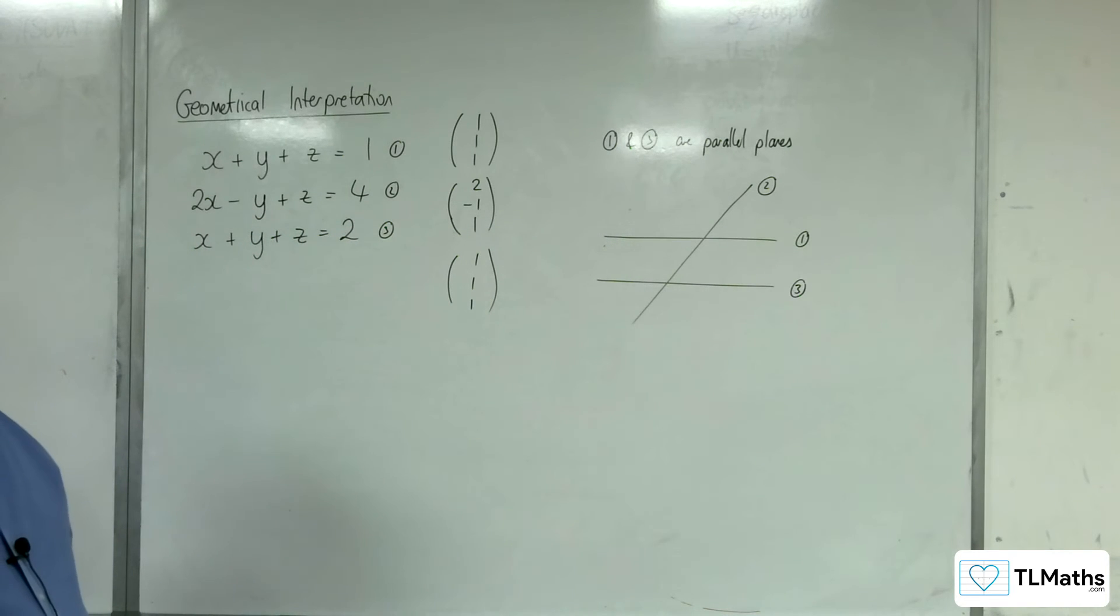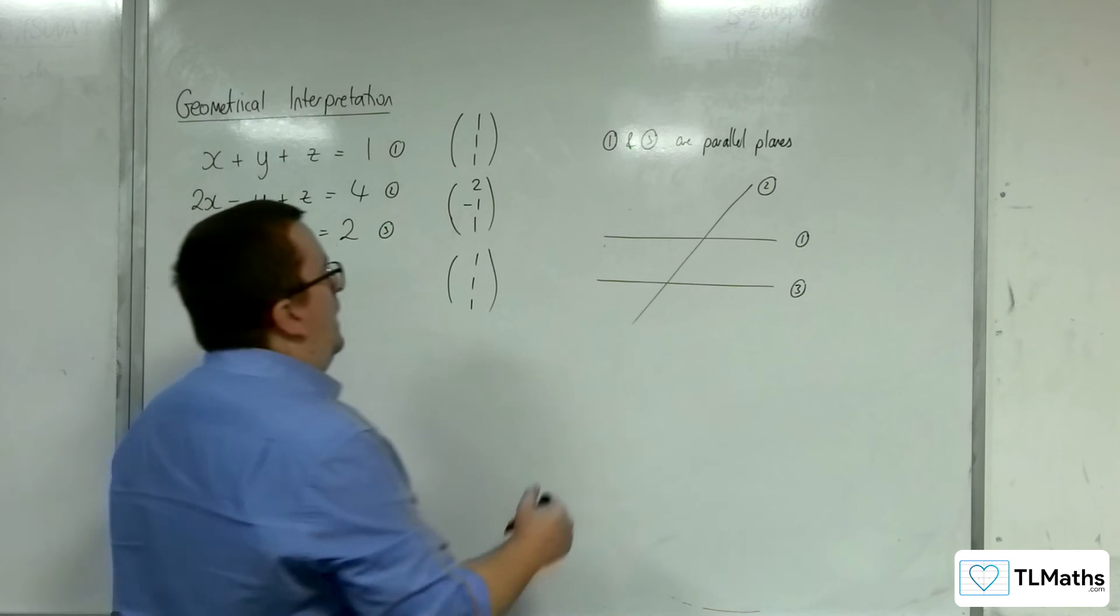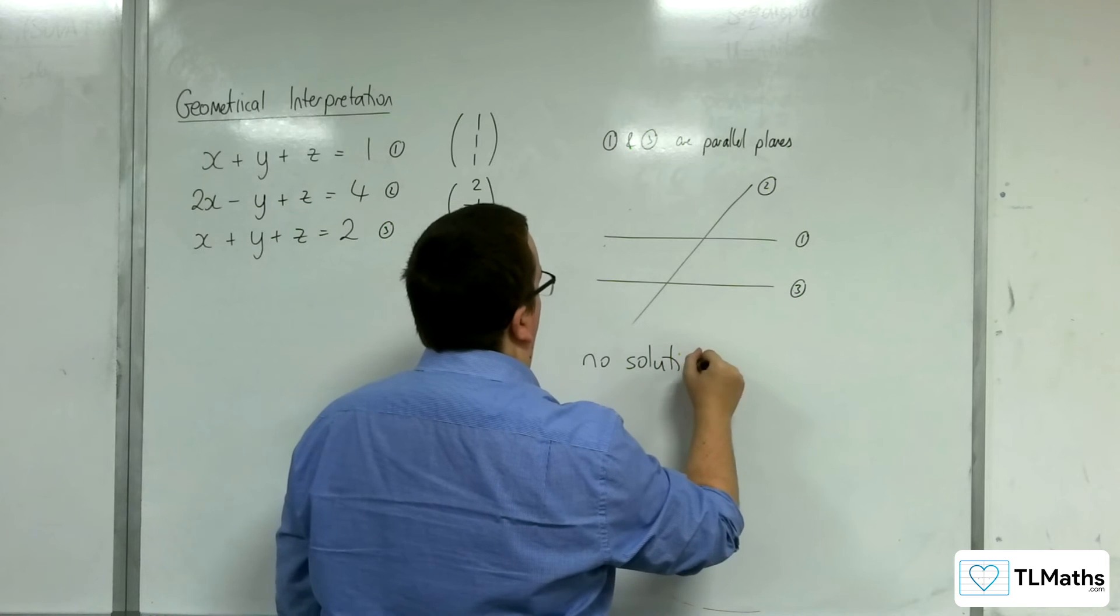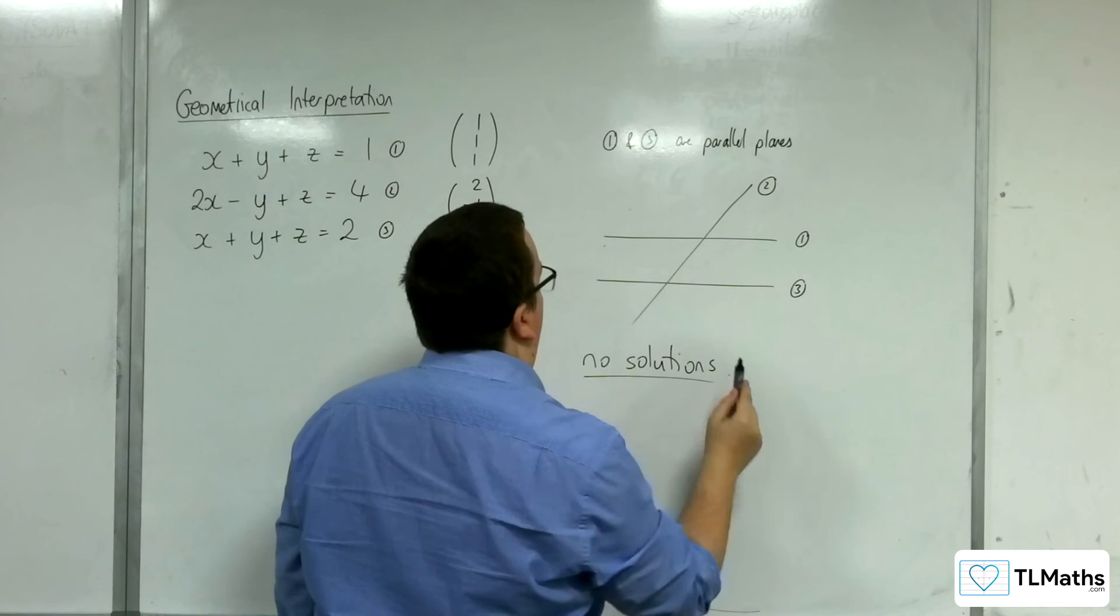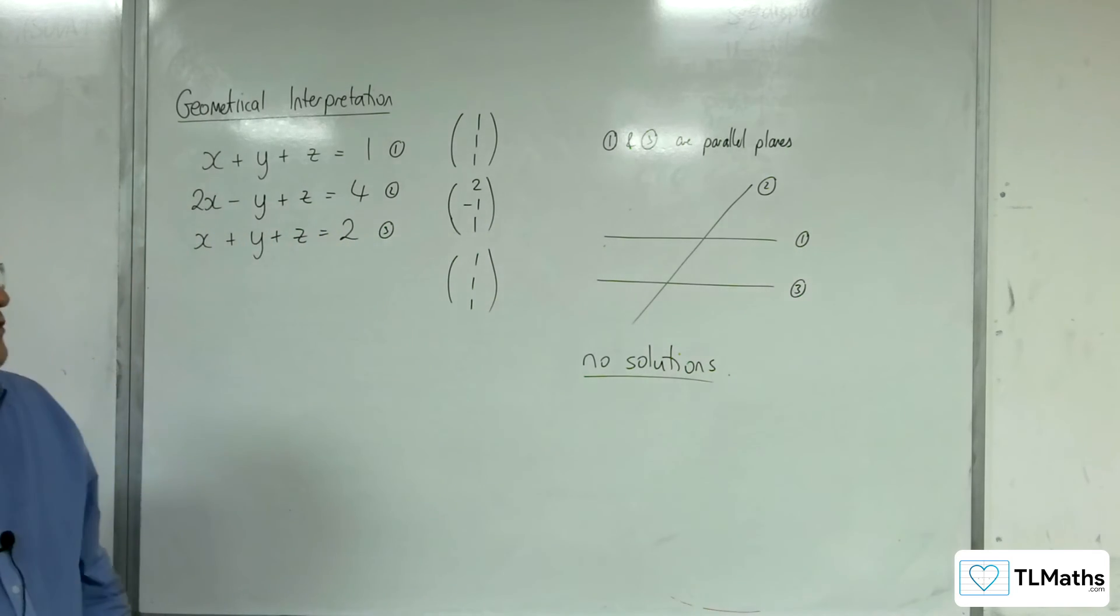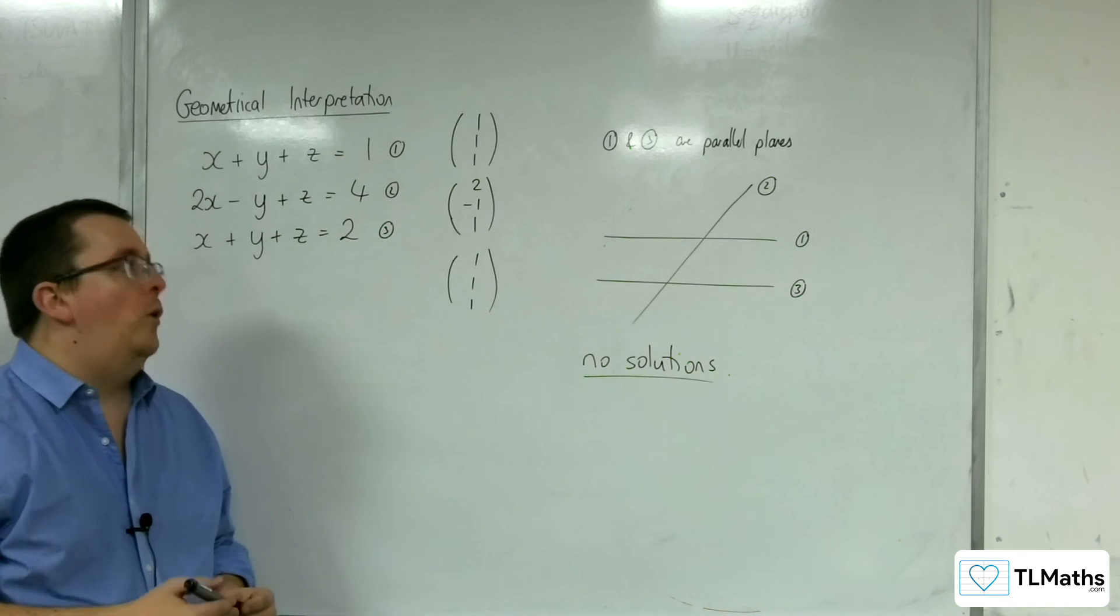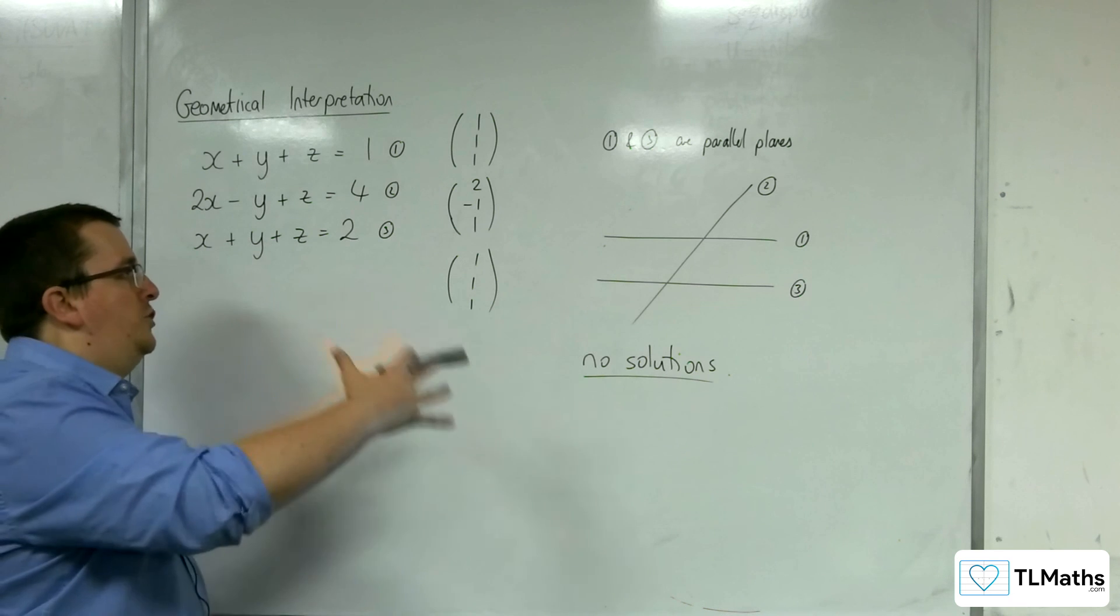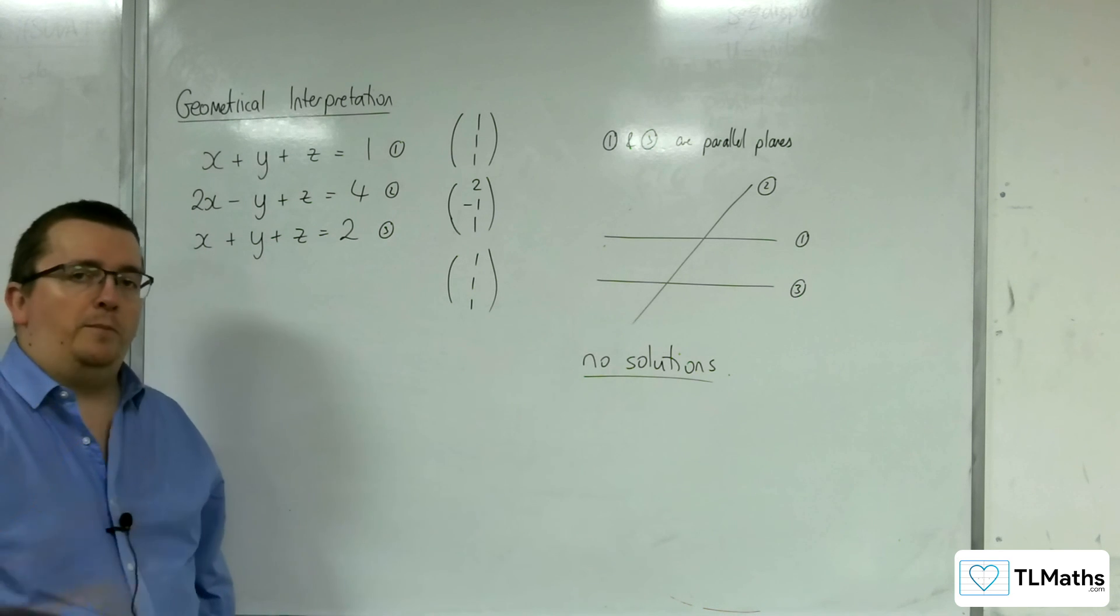But there are no points in common to all three. And so there are no solutions to this. The three planes are not intersecting at any common point. And so that is the geometrical interpretation going on behind the scenes.